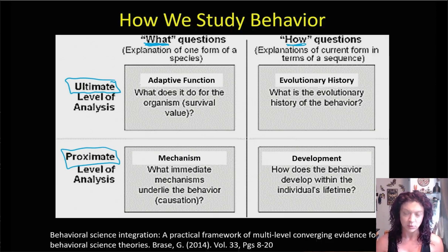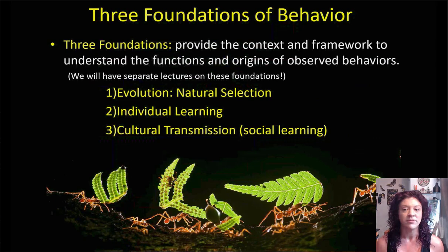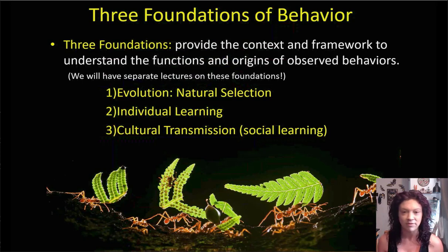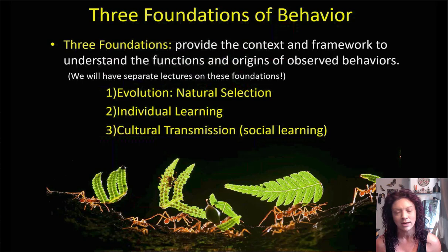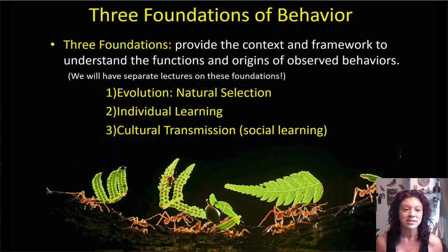Those are the basics when it comes to defining the terms we use to study behavioral adaptations in animals. What we're going to talk about now are the foundations of behavior — the foundations of behavioral science. These three foundations provide the context and framework that allow us to understand the functions of behaviors and their origins. We are going to have separate lectures on each of these foundations. The first is evolution, specifically natural selection. The second is individual learning. And the third is cultural transmission or social learning.